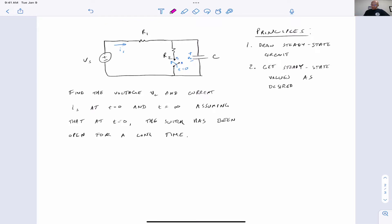So in this problem, we want IS and VC, assuming that the switch has been open for a long time already by time zero. And then we're looking for the same values at time infinity, so the switch will have been closed for a long time.